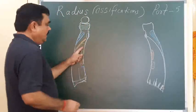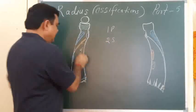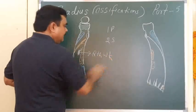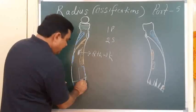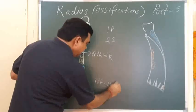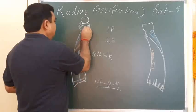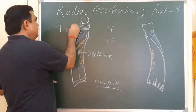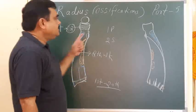Now ossification. The radius has one primary center and two secondary centers. The primary center appears during the eighth week of intrauterine life. One secondary center appears during the first year and fuses during the twentieth year. The secondary center for the upper end appears during the fourth year and fuses during the eighteenth year of life.